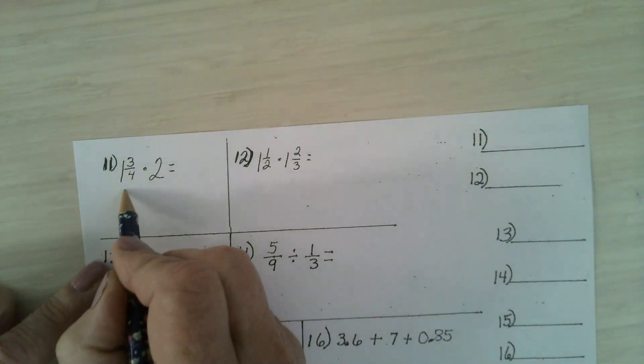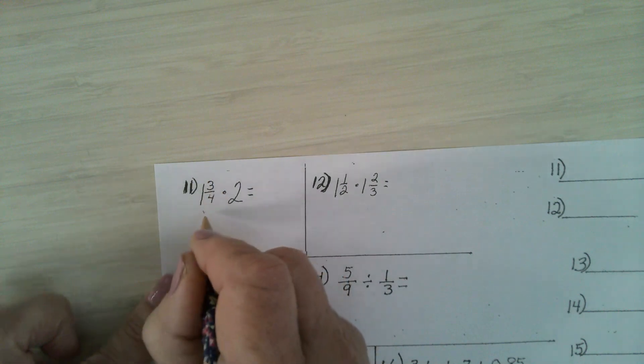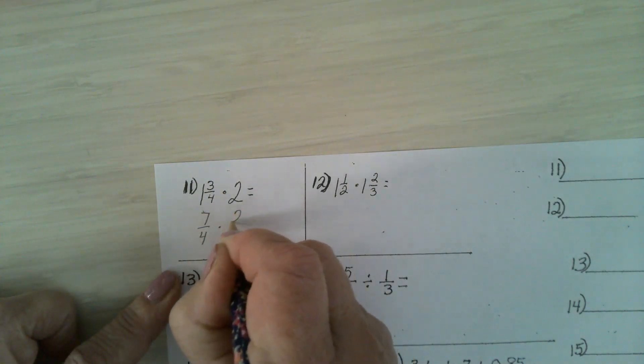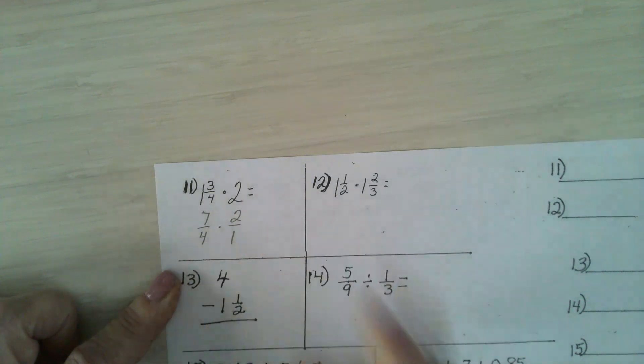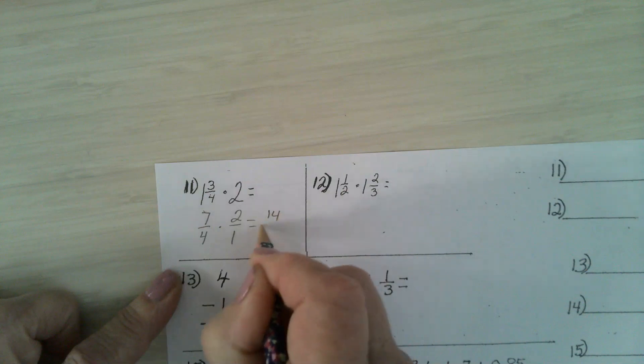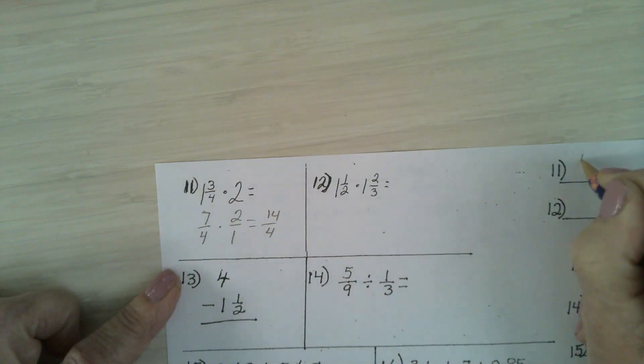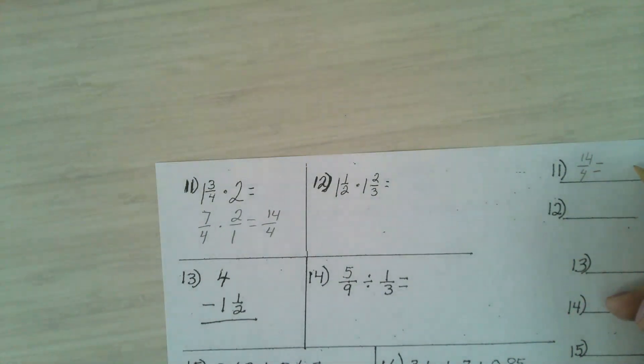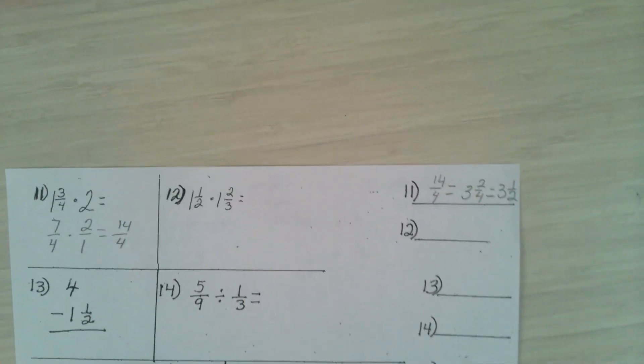Change it to an improper fraction. 4 times 1 is 4 plus 3 is 7. Gently pick the 2 and put a 1 underneath it. You have to change them to improper fractions. Multiply. You will have 14/4. If you have that, that would be counted right. That is the same thing as 3 and 2/4, which is the same thing as 3 and 1/2. Those are the answers.